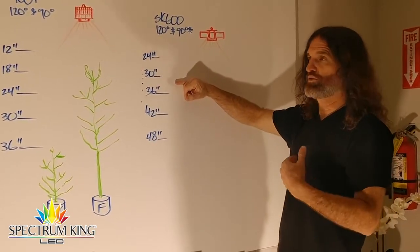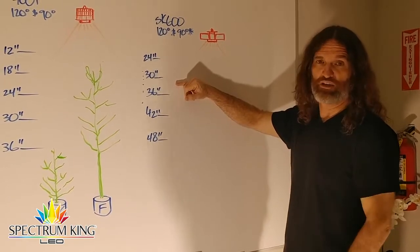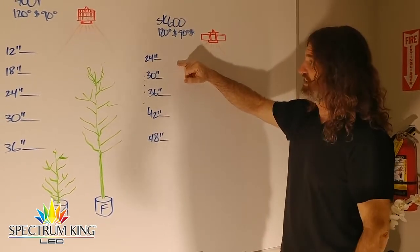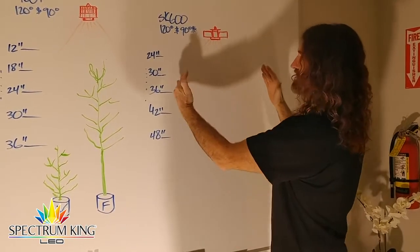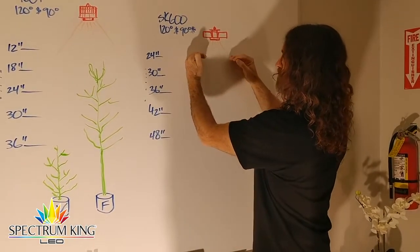If I was dealing with Gorilla Glue or Blue Dream Haze, Lemon Haze - strains that love light - I'll let it get to 24, maybe even a hair closer. But keep in mind, the closer you get, the smaller the coverage area.